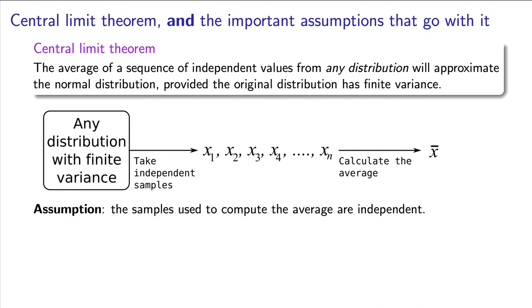We are going to take n samples and calculate the average. We call that average x-bar. The central limit theorem says that x-bar comes from the normal distribution.